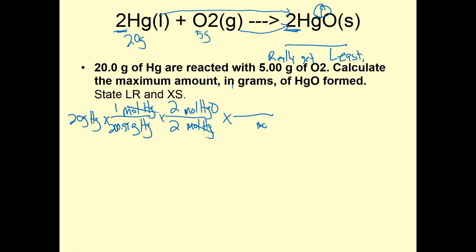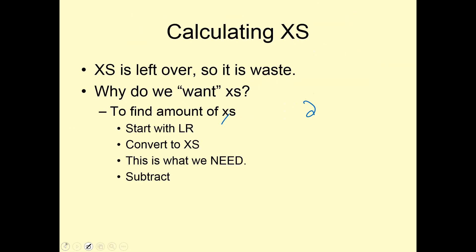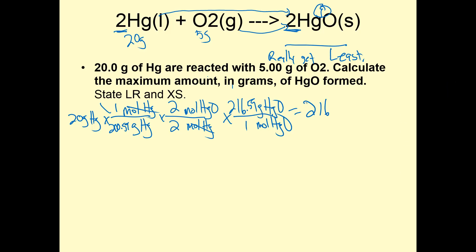Now I'm going to convert my moles of HgO into grams of HgO. One mole — go to the periodic table — mercury is 200.59 plus oxygen is 16, so 216.59. So now doing the math: 20 divided by 200.59, divided by 2, times 2, times 216.59, and I get 21.60 grams of HgO.